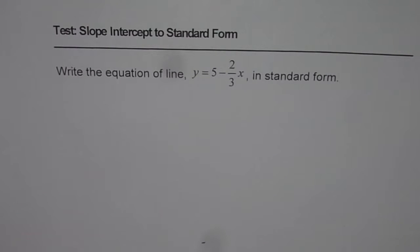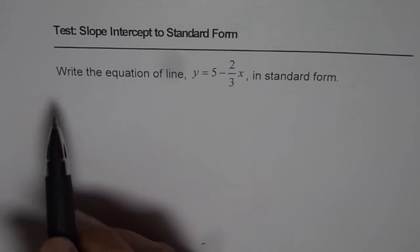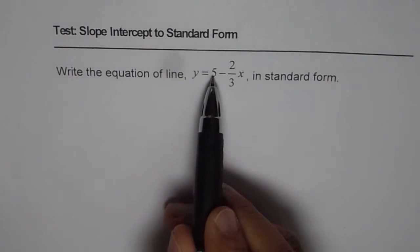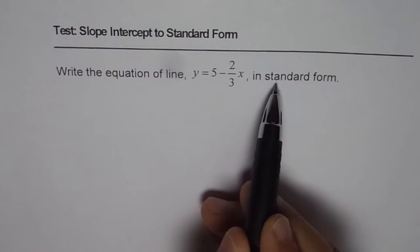I'm Anil Kumar and here is the test problem to write slope-intercept form to standard form. Question is, write the equation of line y equals 5 minus 2 over 3x in standard form.